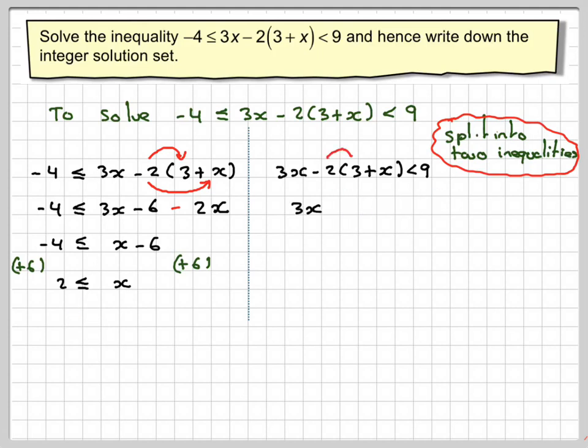Now we do the same here. Expand the brackets. We get 3x - 6 - 2x < 9. Collect together the like terms. So we get x - 6 < 9. Add 6 to both sides. Then we're going to get that x must be less than 15.